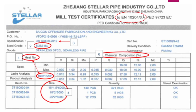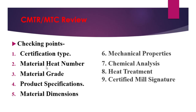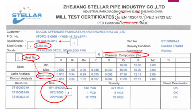I hope this point is clear to all. Second is the material heat number. Let me show you the heat number one by one. You can see here is the heat number. This shows both the ladle analysis and product analysis - this is the heat number for this material.